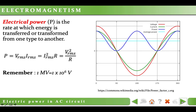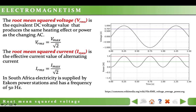When we describe the power of any AC device, we mean average power. The voltage and current are not constant — they change from zero to maximum. So to define the voltage or current of a device, we use RMS (root mean squared) voltage or root mean squared current values. The root mean squared voltage, V_RMS, is the equivalent DC voltage value that produces the same heating effect or power as the changing alternating current. Similarly, the root mean squared current is the equivalent DC current value that produces the same heating effect or power. In South Africa, electricity is supplied by ESKOM power stations and has a frequency of 50 Hz.